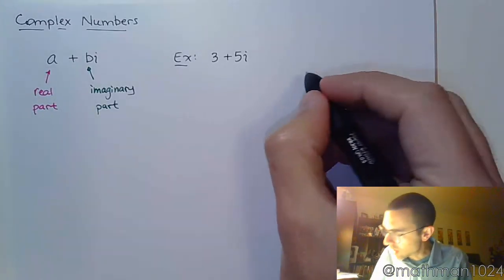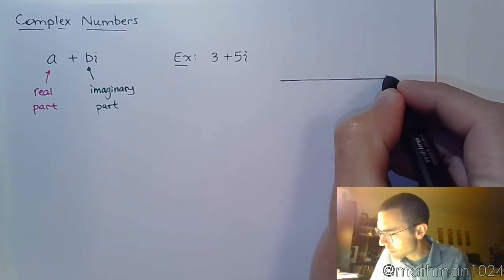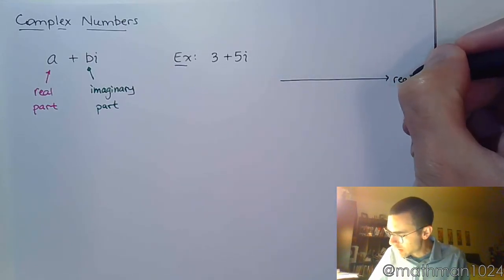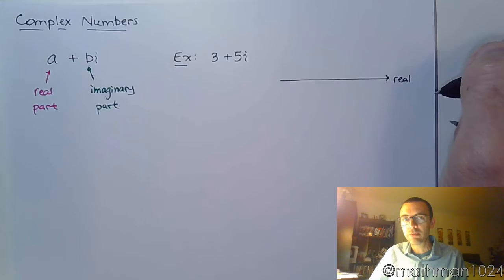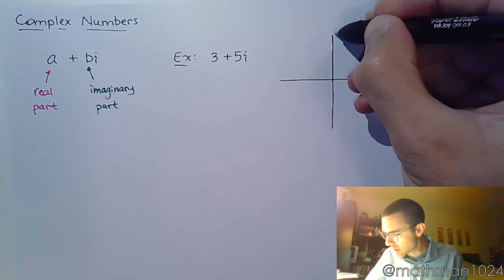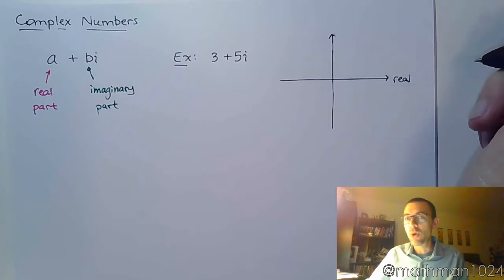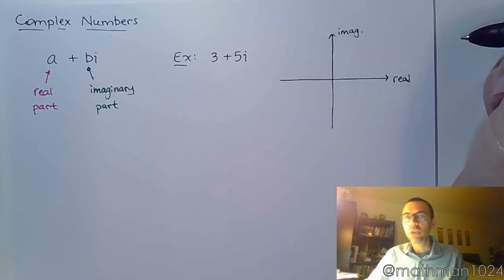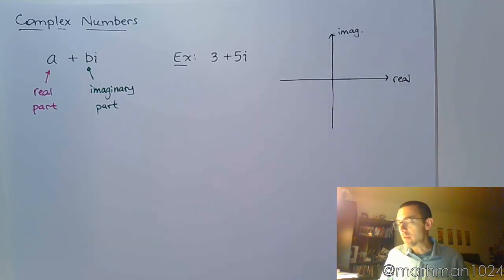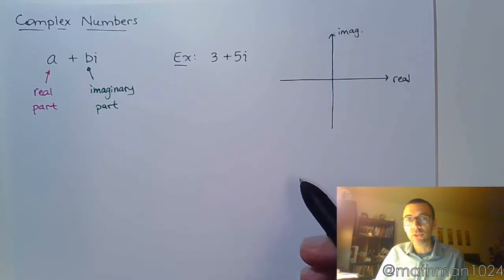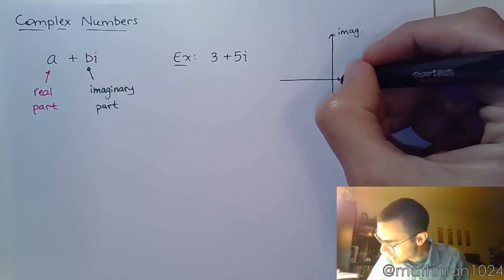When we have real numbers, we can just graph those guys on a number line, right? What about complex numbers? Well, use that number line as an x-axis and then draw something very similar to a y-axis here, and this is where you're going to do the imaginary part. So if you ever have to plot or graph a complex number, you use this complex plane where you have the real axis and the imaginary axis.